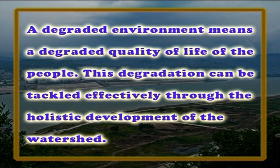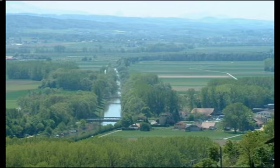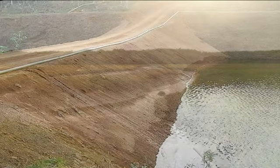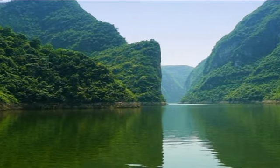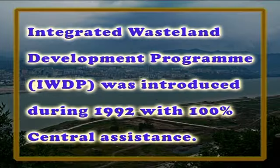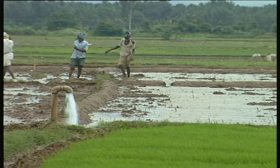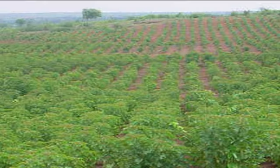The changes in the environment directly affect the lives of people depending on it. A degraded environment means a degraded quality of life of the people. This degradation can be tackled effectively through the holistic development of the watershed. A watershed provides a natural geohydrological unit for planning any development initiative. The approach would be treatment from ridge to valley. The Integrated Wasteland Development Program, that is IWDP, was introduced during 1992 with 100 percent central assistance.